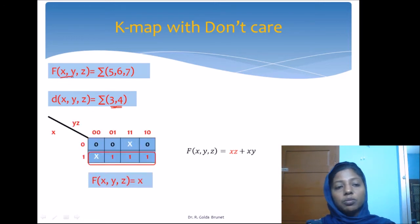Since there are 3 input variables, we use a 3-variable Karnaugh map. We mark minterms 5, 6, 7 as 1. This is 5, this is 6, and this is 7. The don't cares are 3 and 4, which we mark as X.